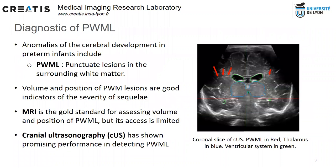The main anomalies are ventricular dilatation, as seen in green on this slice, as well as punctuate lesions in the surrounding white matter. Volume and position of these lesions are good indicators of the severity of potential handicap.